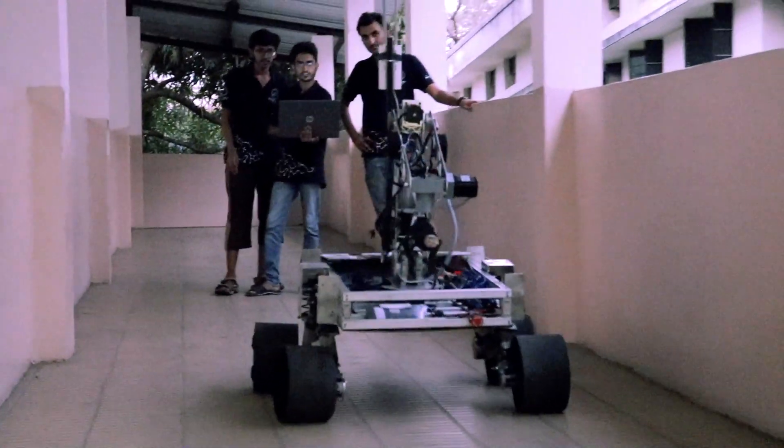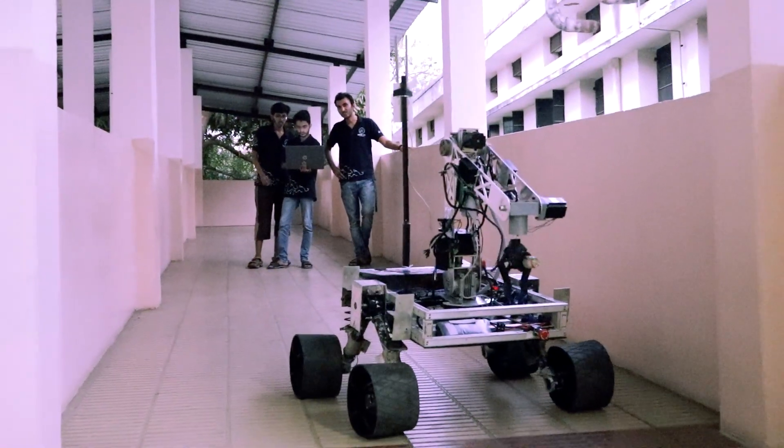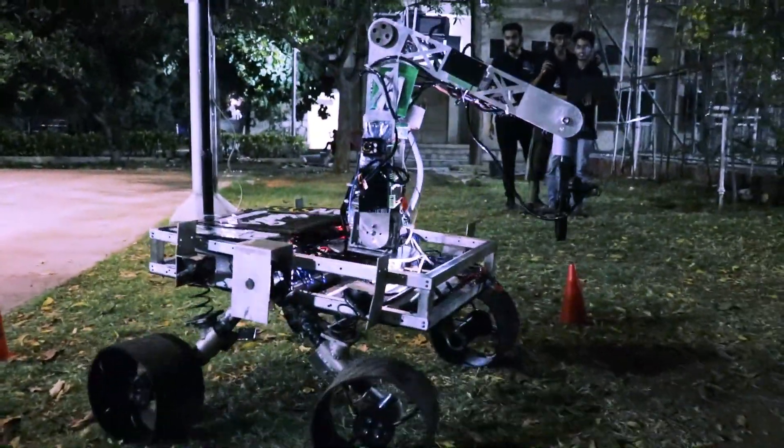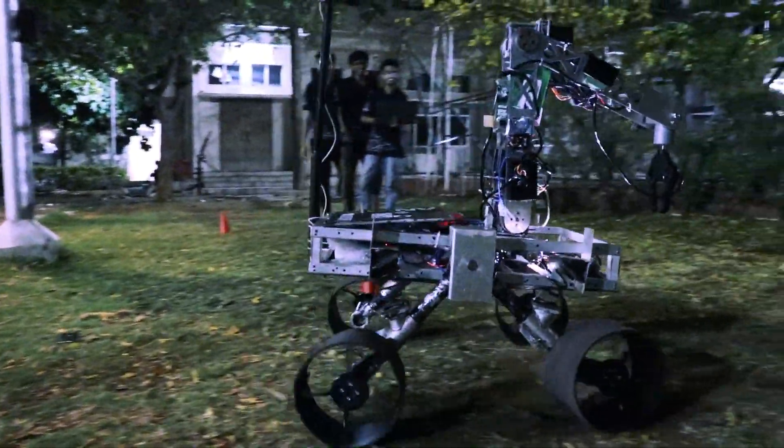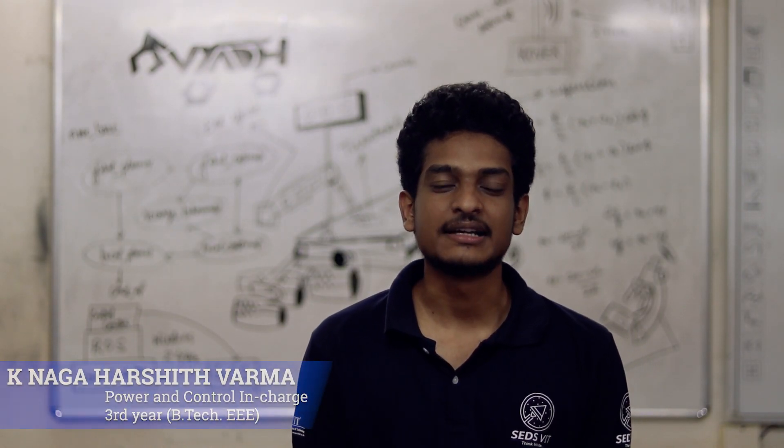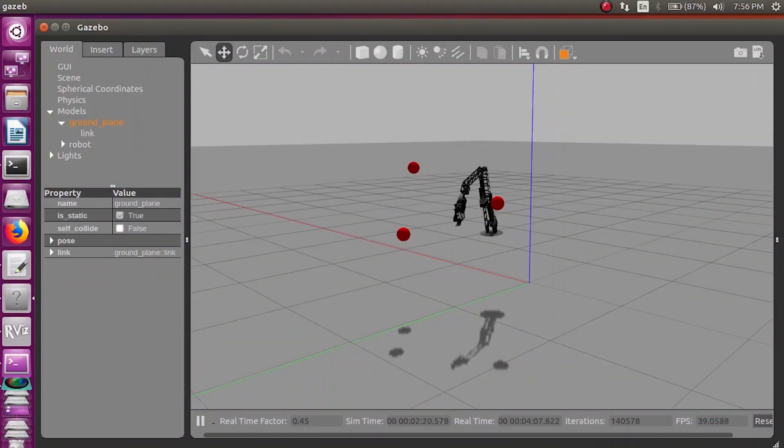The 2.4 GHz communication system comprises two Ubiquiti Nanostation Loco M2s at the GCS and an Ubiquiti Rocket M2 with an omnidirectional antenna on the rover. We can access automatic readings from the accelerometer and magnetometer. This data is used to operate the robotic arm using inverse kinematics to reach the desired target.